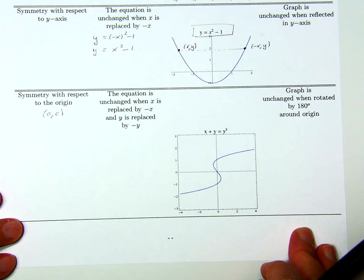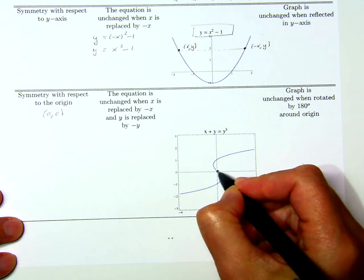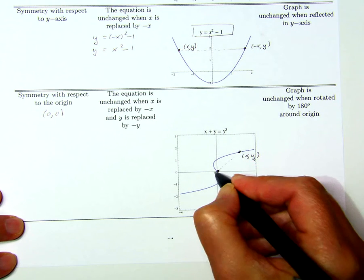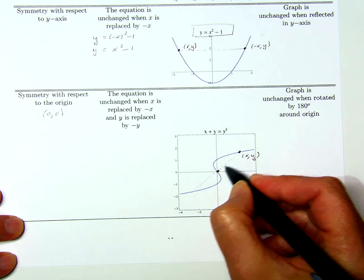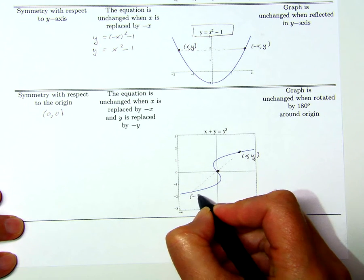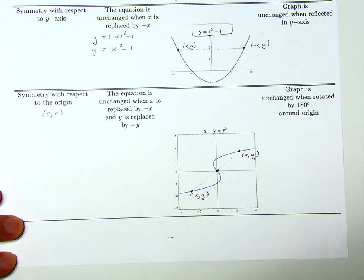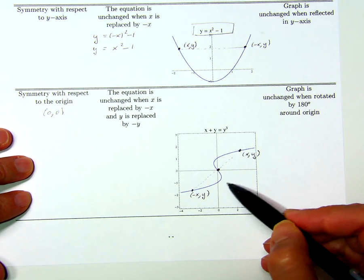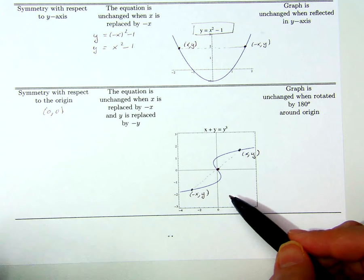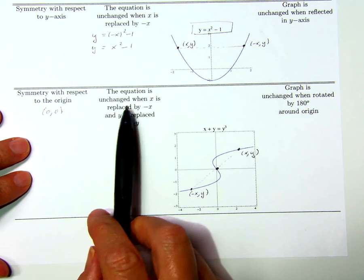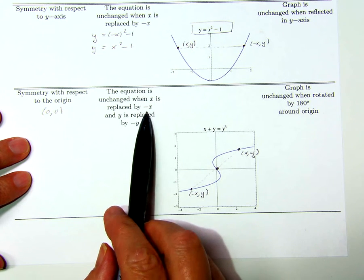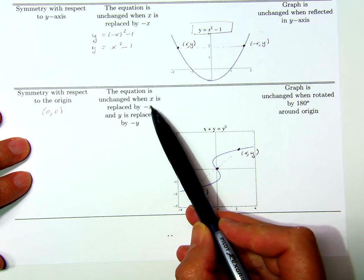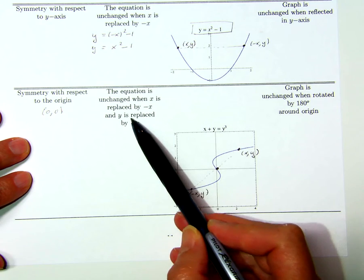What about symmetry with respect to the origin, the point (0, 0)? Geometrically, it means that given any point (x, y) on the graph, if I take a line joining that point to the origin and then extend it the same distance in the opposite direction, I should get to the point (-x, -y). So symmetry with respect to the origin means that if (x, y) is on the graph, then (-x, -y) must also be on the graph. Here's a test: if the equation is unchanged when I replace x by -x and y by -y simultaneously, then the graph has this symmetry. Note that I have to replace both x by -x and y by -y — not just one.